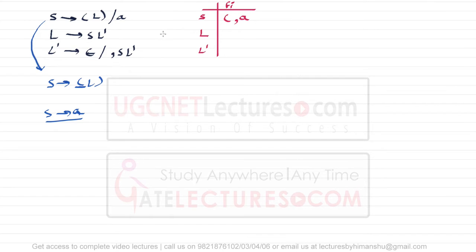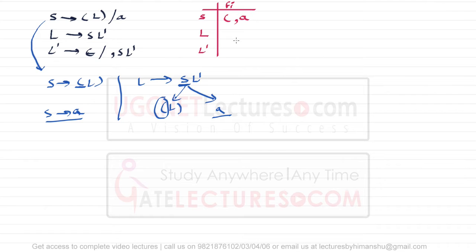For the First of L, the production is L derives S L-dash. Since S can be replaced by opening-bracket L closing-bracket, the first symbol is opening-bracket, or S can be replaced by small-a, so the First of L is opening-bracket and a. For L-dash, it contains epsilon, so epsilon is in the First of L-dash, and the other production starts with comma, so the First of L-dash is epsilon and comma.